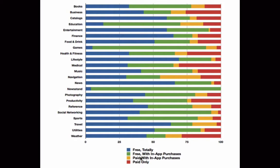The second category is free with in-app purchases, and this means that they're using Apple's in-app purchase system, so this we can track and that's why we've shown it on the graph here. The orange bars represent paid with in-app purchases, so the developers are getting some money on the front end and on the back end, and the red bars represent paid-only apps.